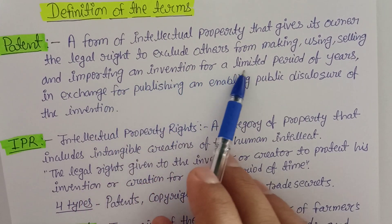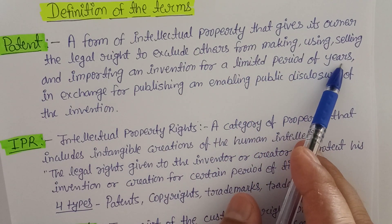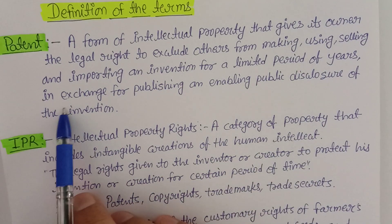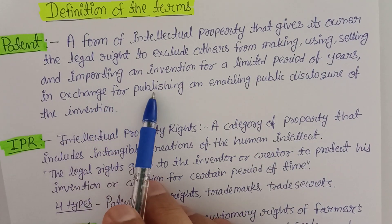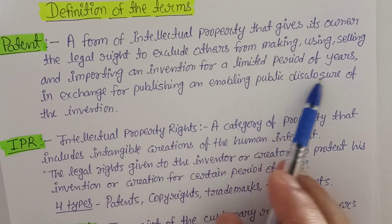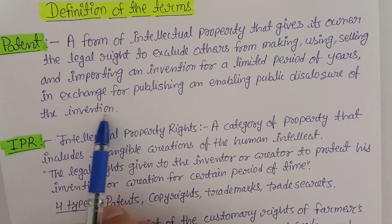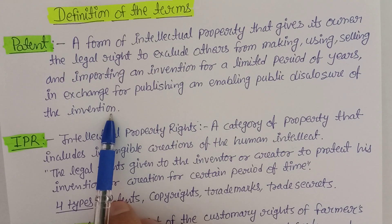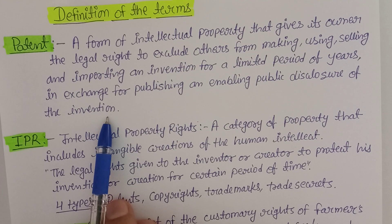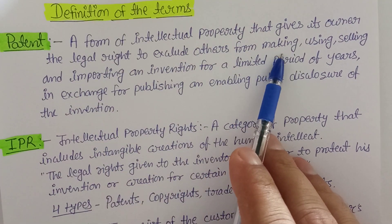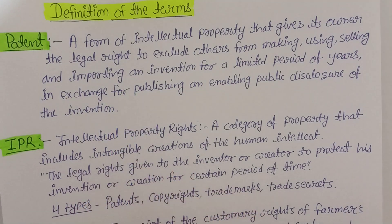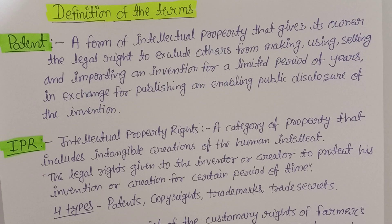The patent protects the invention for a limited period of years — during that time period nobody can make, use, sell, or import that invention. This is in exchange for publishing and enabling public disclosure of the invention. Until the patent expires, nobody can do those kinds of things like making, using, selling, and importing of that particular invention. That is called a patent.